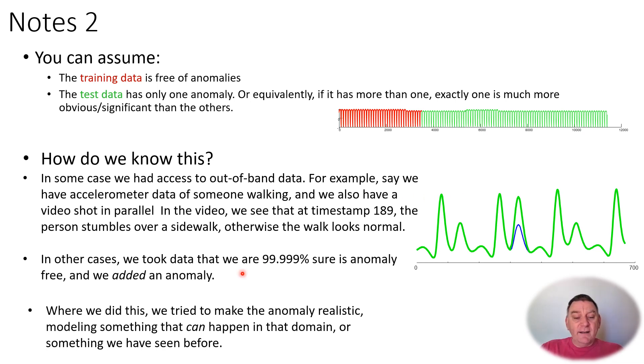In other cases, we have datasets that we're virtually certain have no anomalies, and we added a fake anomaly. When we did this, we tried to do this in a way to make the anomaly somehow plausible for that domain. For example, we consulted a cardiologist here who told us a certain kind of heartbeat can give this extra high bump here in the arterial blood pressure.